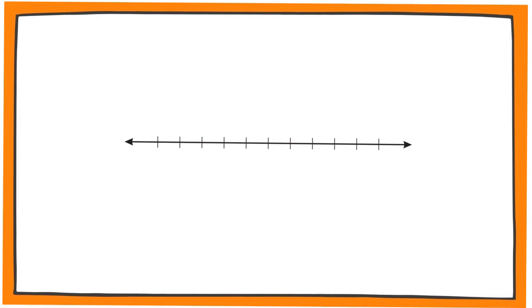To draw the number line, we first draw a horizontal line. Once you've done that, you place an arrow at the end of each line.